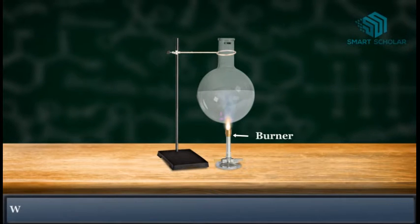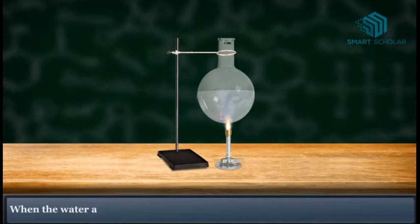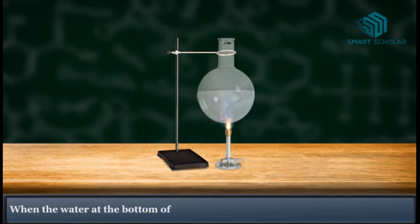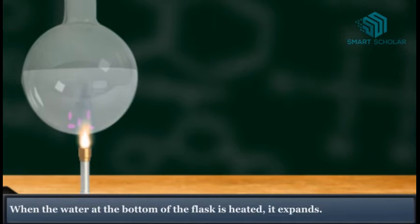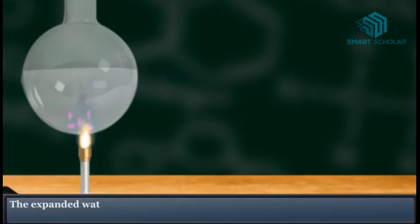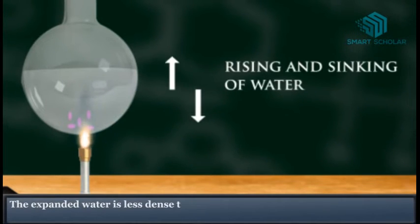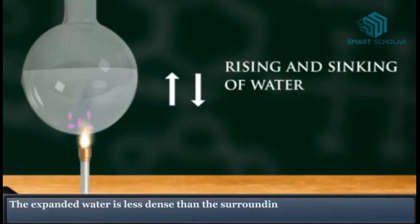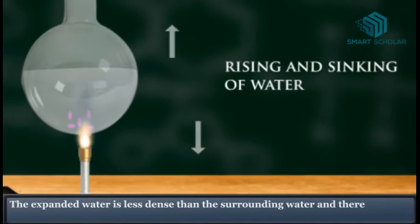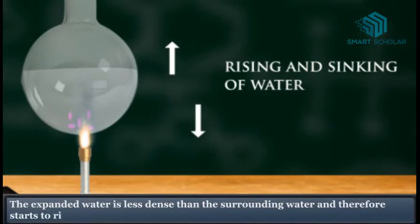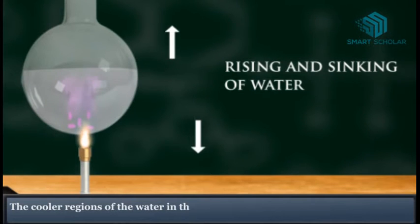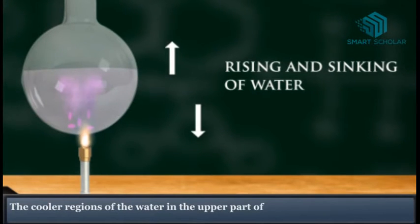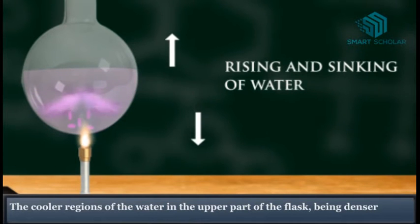Observe the crystals. When the water at the bottom of the flask is heated, it expands. The expanded water is less dense than the surrounding water and therefore starts to rise. The cooler water in the upper part of the flask, being denser, sinks.